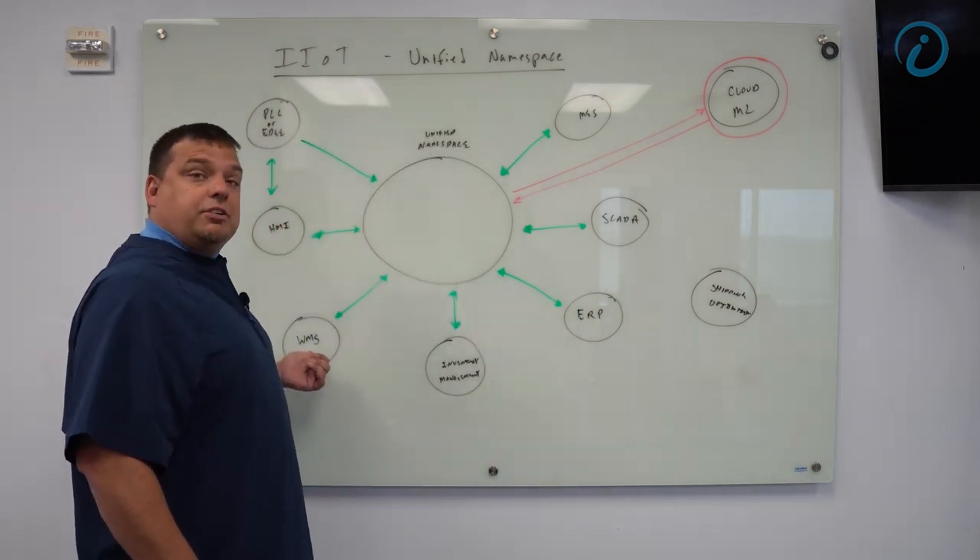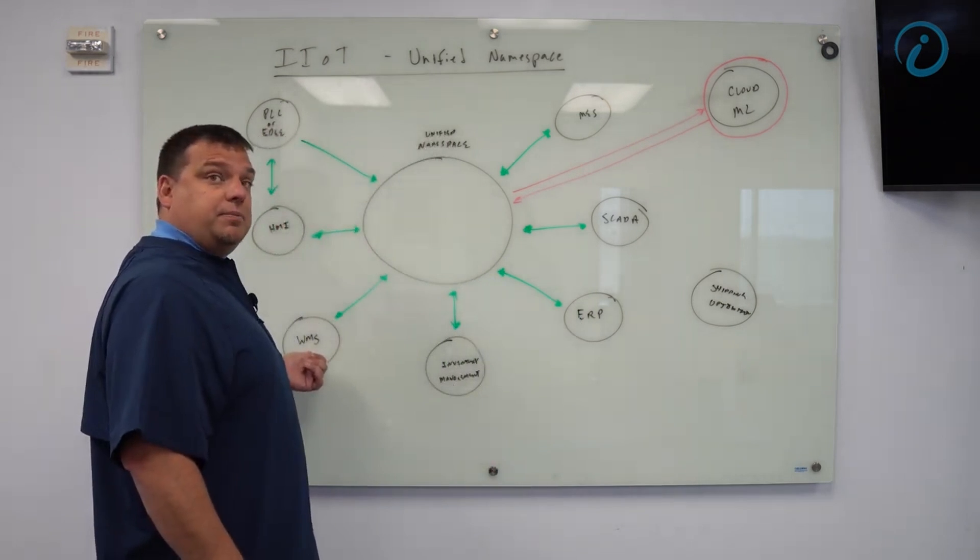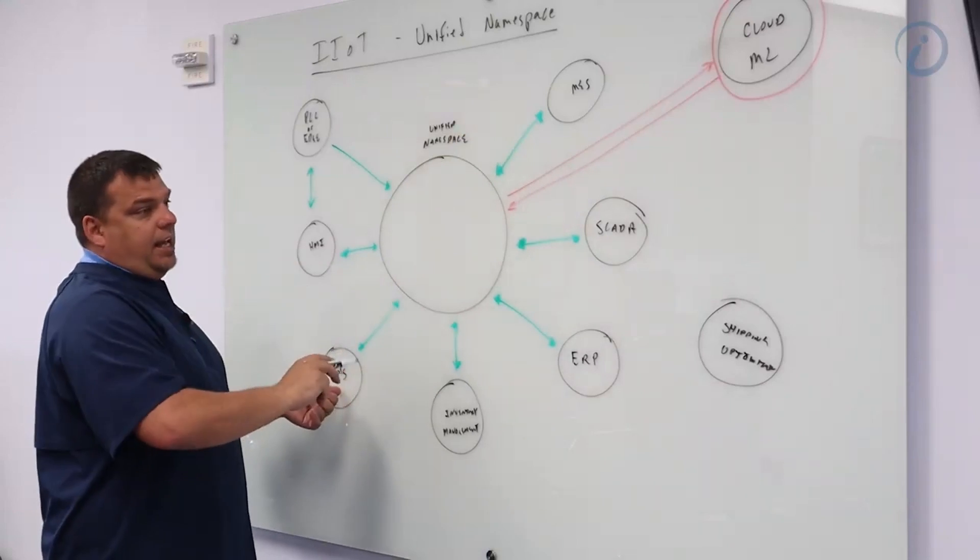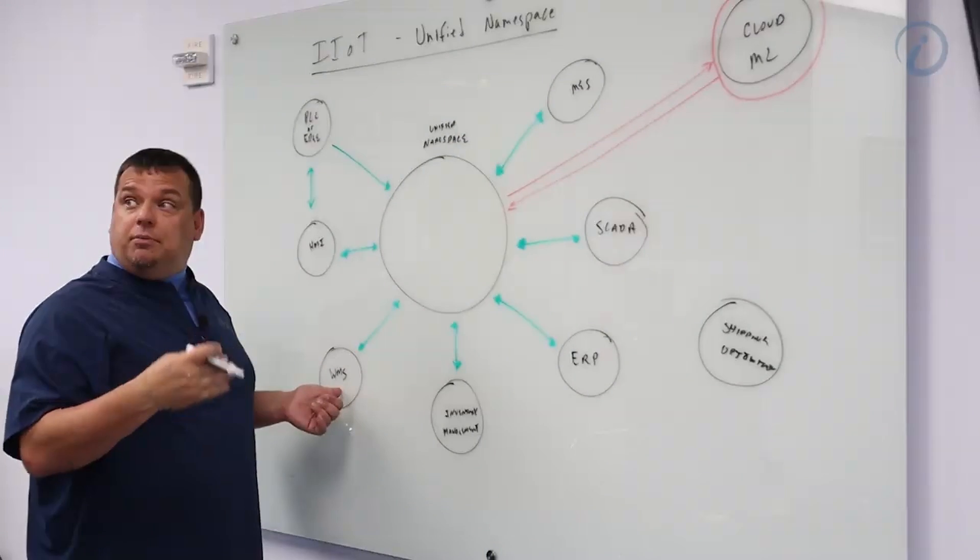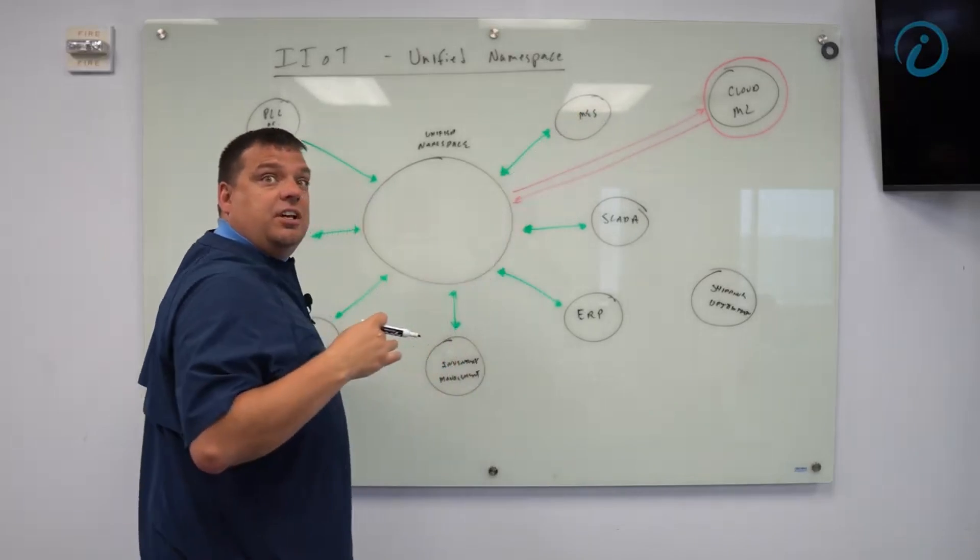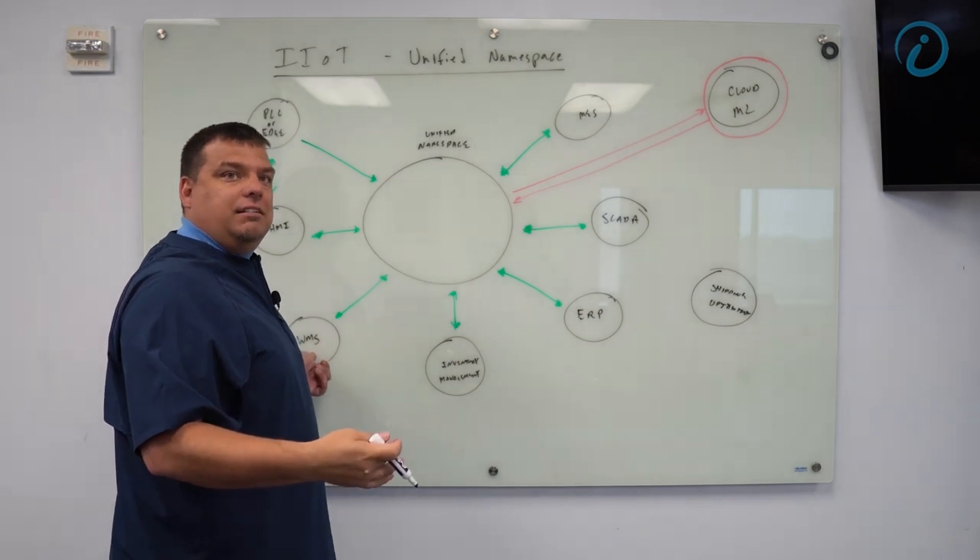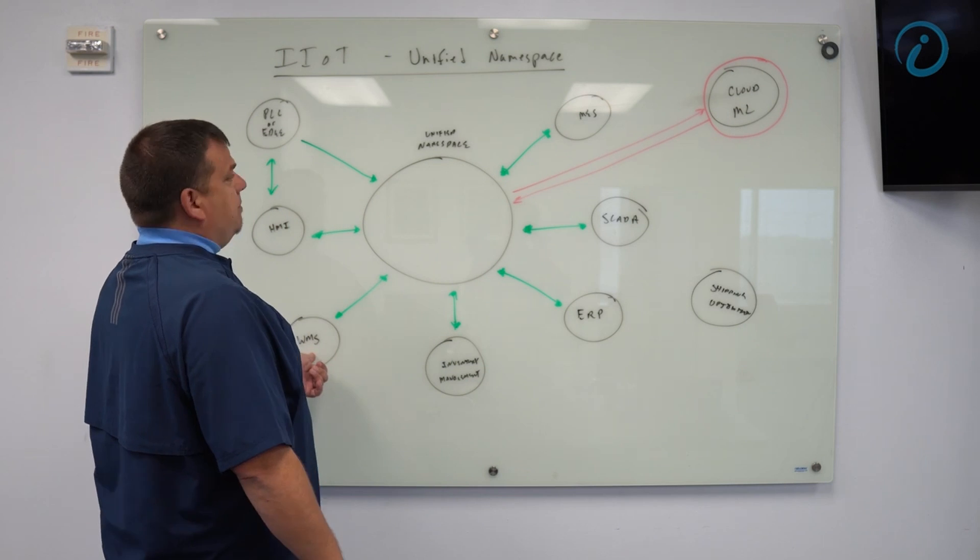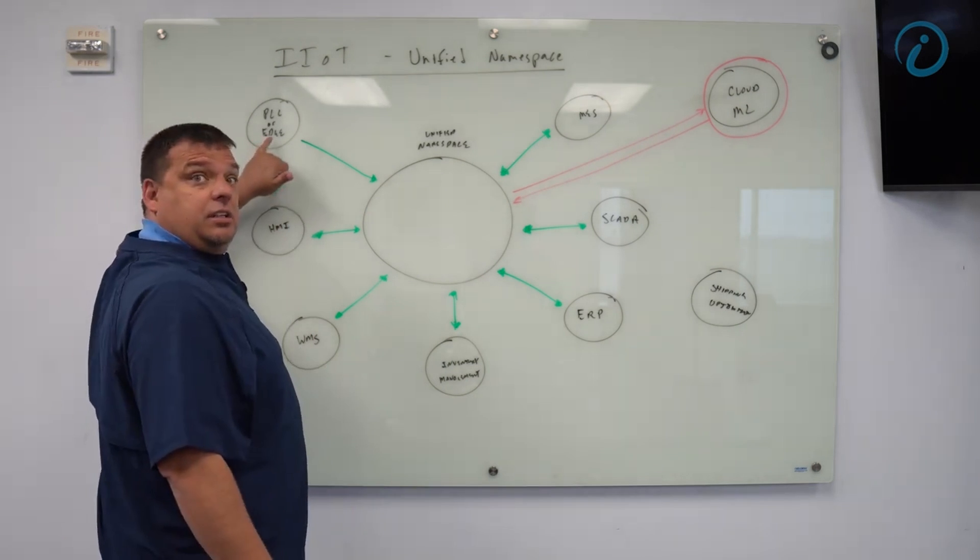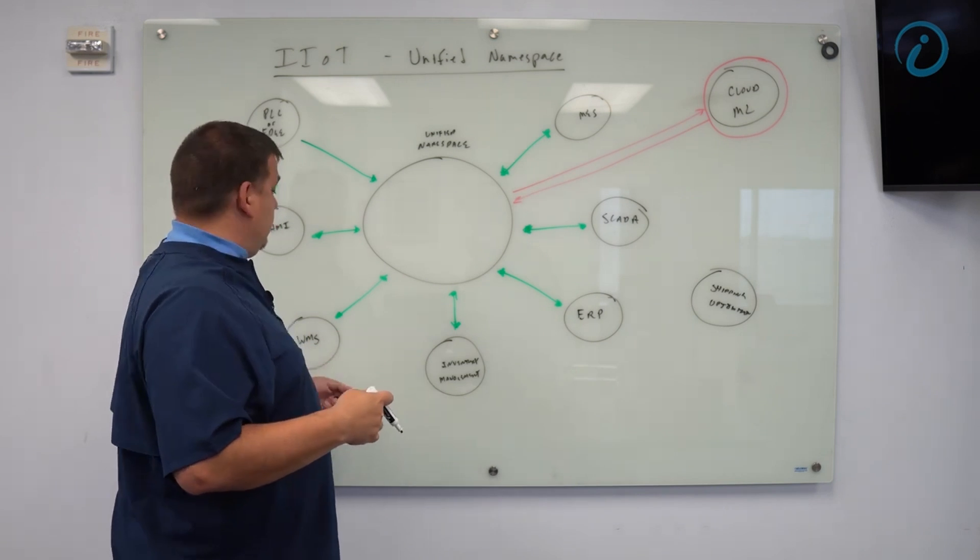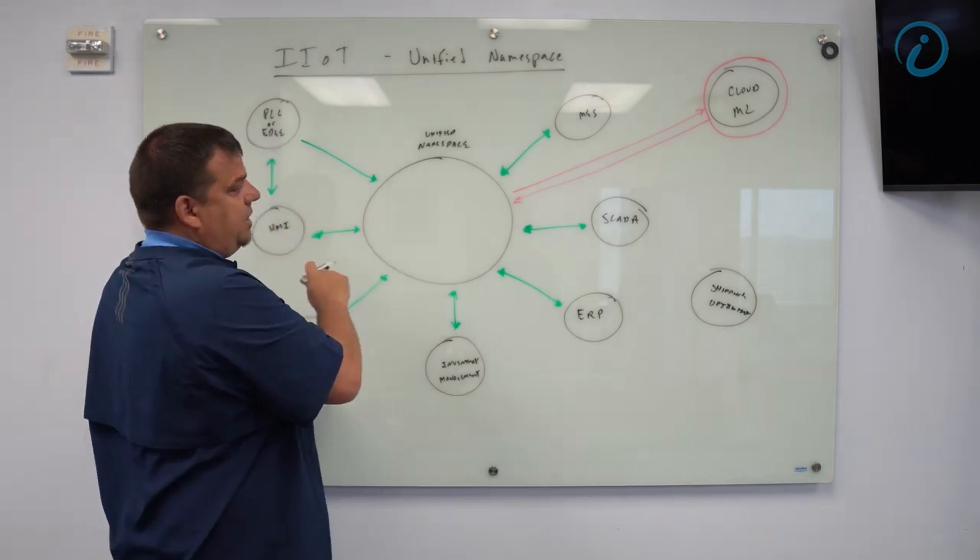It's going to need warehouse information from the warehouse management system. It is going to need information from the MES system. Let's say I don't have the complete order fulfilled. I need to know what is the status of the orders that are in progress right now. So I'm going to need information from the MES system. I might need information from the edge. Is the machine currently running right now? Is it not currently running right now? I may need information directly from the edge.